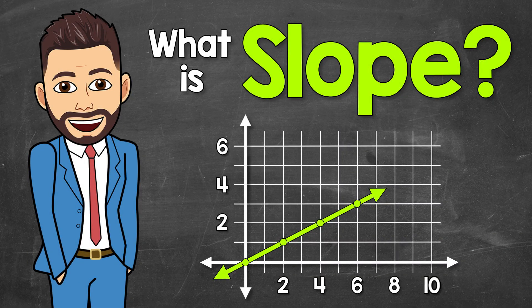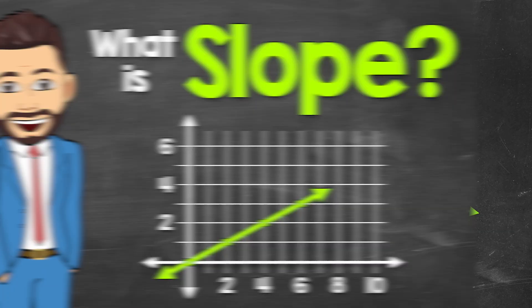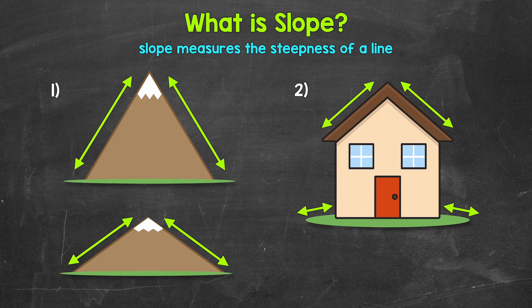Welcome to Math with Mr. J. In this video, I'm going to cover what slope is. So, what is slope? Well, simply put, slope measures the steepness of a line. How much a line goes up or down as it moves from left to right.